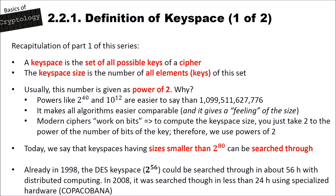Today we say that keyspaces smaller than 2 to the power of 80 can be searched through. Already in 1998, the Data Encryption Standard or DES cipher keyspace, which is 2 to the power of 56, could be searched through in about 56 hours with distributed computing. And in 2008, the keyspace was searched through in less than 24 hours using specialized hardware called Copa-Cobana.